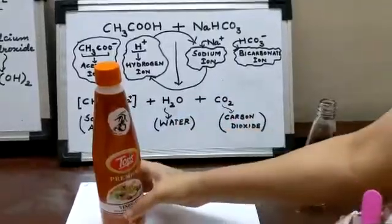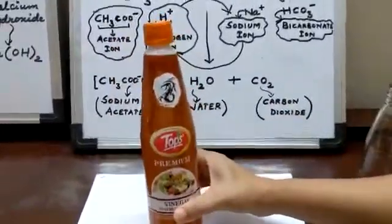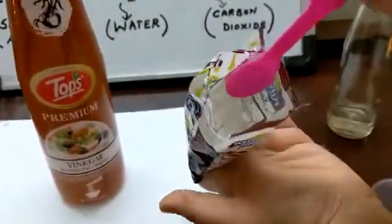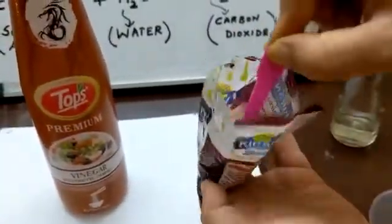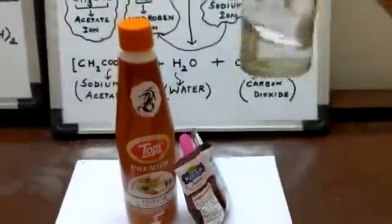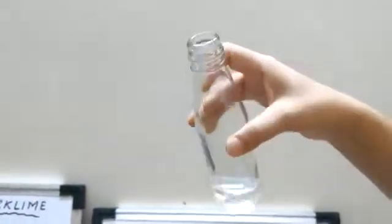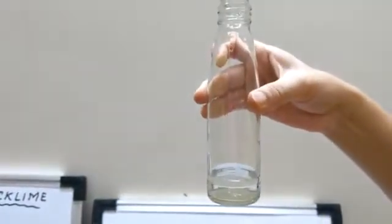Today we are going to do the reaction of vinegar with baking soda. This is baking soda here. I have already added vinegar in this bottle. You can see this is a glass bottle, but you can also use a plastic bottle instead.